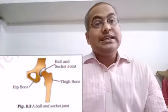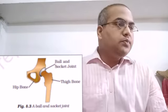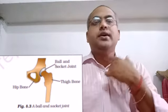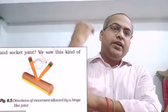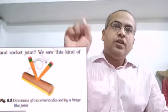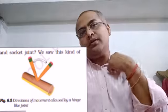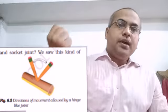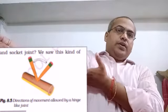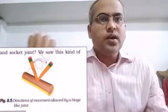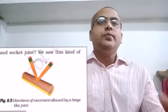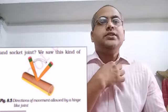Movable joints are those which allow movement. Depending upon the type and extent of movement they allow, movable joints can be divided into four types: number one, pivot joint; number two, ball and socket joint; number three, hinge joint; and number four, gliding joint. We had already discussed these joints in Class 5 as well, and today we will discuss them again.